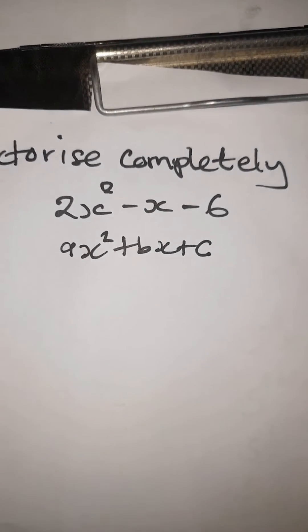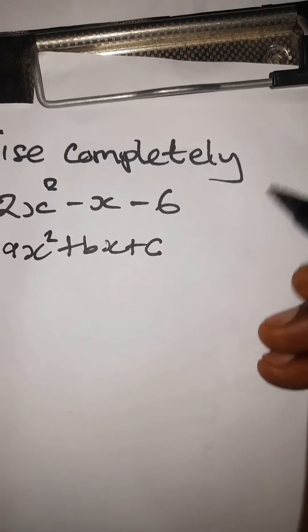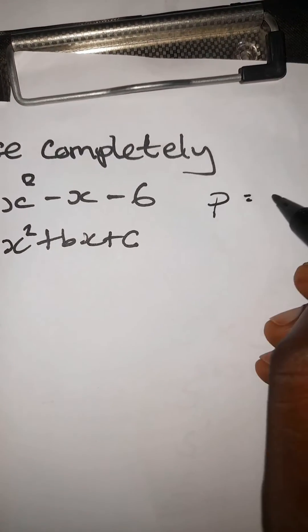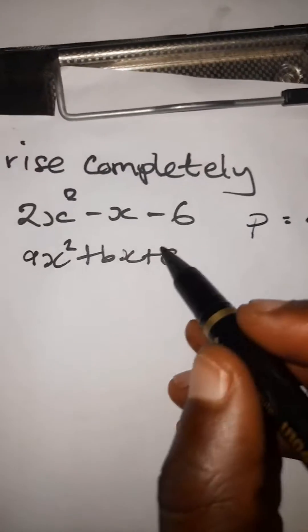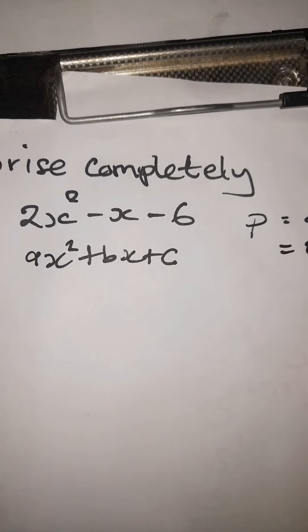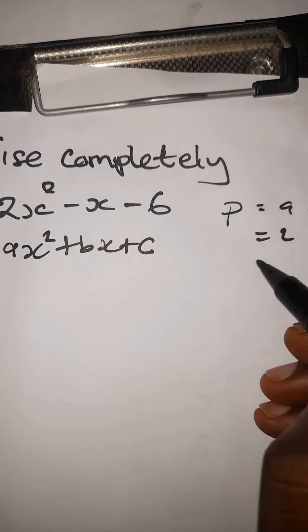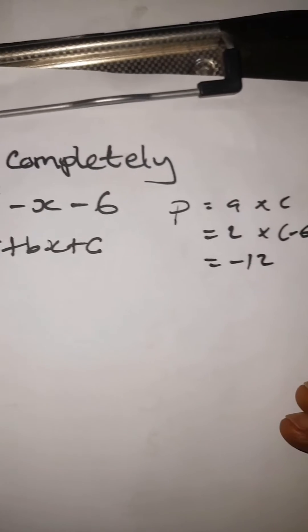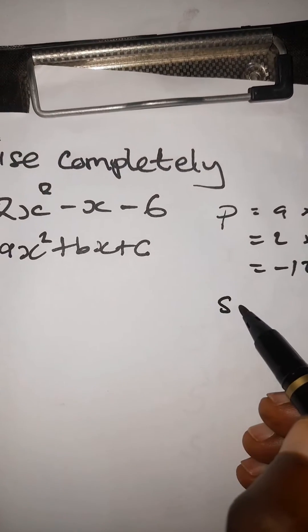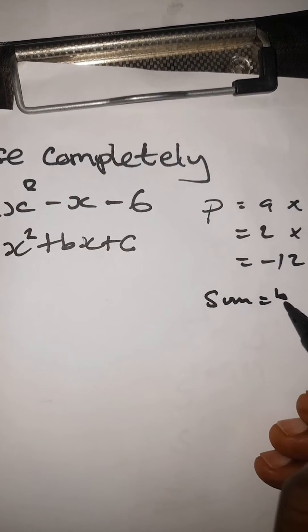The first thing you need to find is the product of a and c. a is 2 and c is negative 6, so the product is negative 12. The sum is b, and b in this case is negative 1.